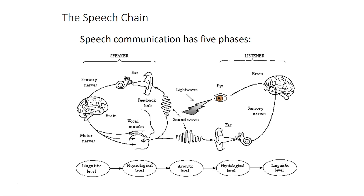This cascade of speech production processes is often discussed in the context of speech communication more generally, using the speech chain. This image shows one example of the speech chain taken from a book titled The Speech Chain, which is a pretty good layperson's introduction to speech production and speech perception—something you might have your parents read to help them understand what you've been studying in class.